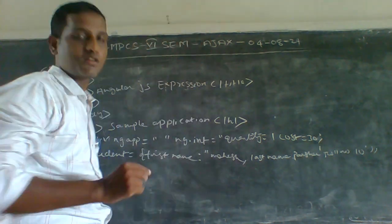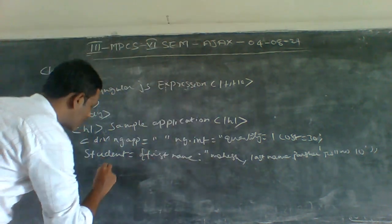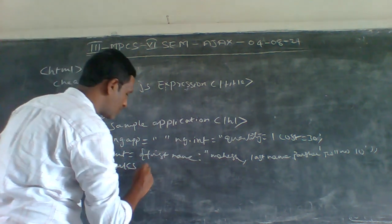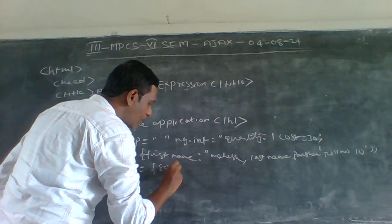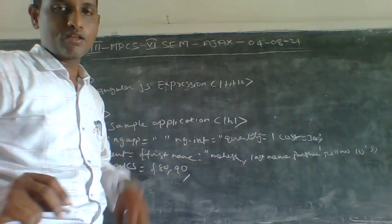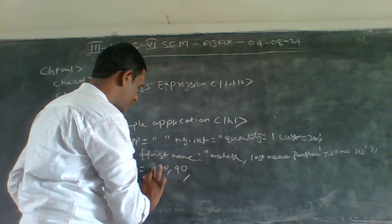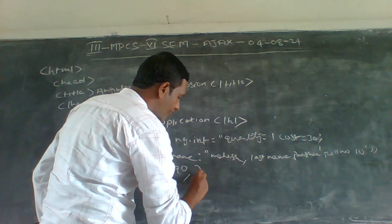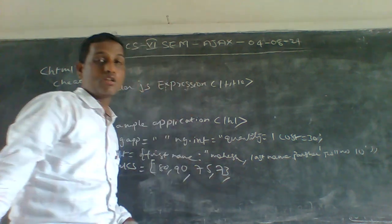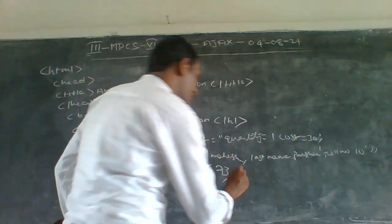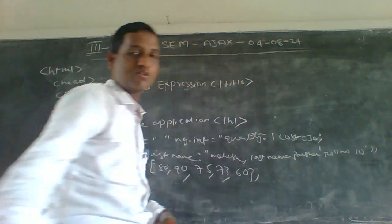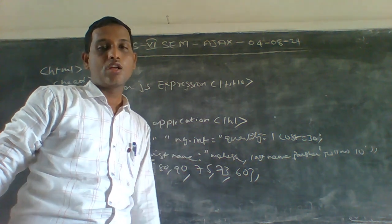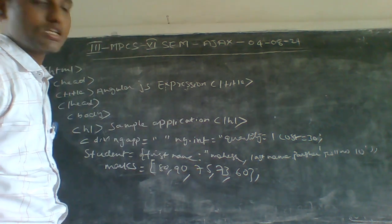Next is marks. Marks is equal to 80, 90, 75, 73, 60. I am closing the division tag.